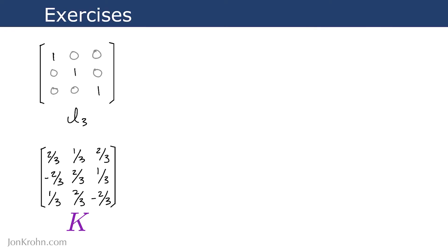In the preceding video, I explained what orthogonal matrices are, but I didn't give any examples. Identity matrices are an example of an orthogonal matrix.